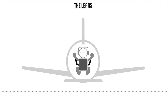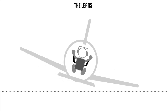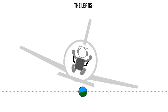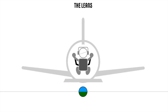The leans happens when the aeroplane enters a slow bank. The vestibular system does not sense this gradual change in attitude, so the pilot continues to feel that the aeroplane is in level flight. When the pilot checks the instruments and realises that the aeroplane is actually turning, he quickly corrects the attitude in the opposite direction.